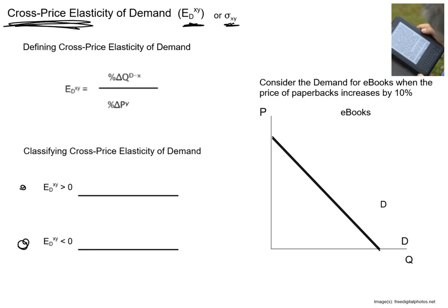Let's figure out what the sign means. In the denominator, I've got the price of the other good — the price of good Y. In the numerator, I've got the quantity demanded of my primary market, the quantity demanded of good X. So it's asking: when the price of a related good — either complement or substitute — changes, what's going to happen to the quantity demanded of good X?